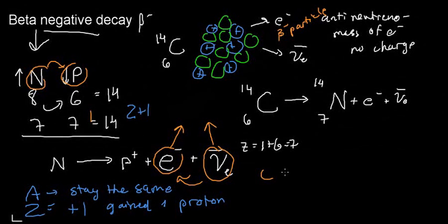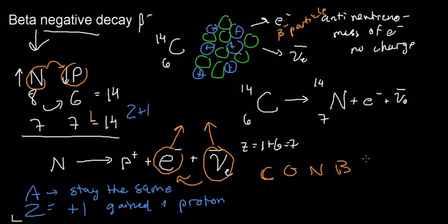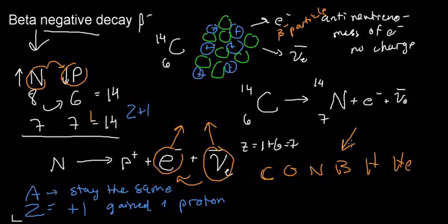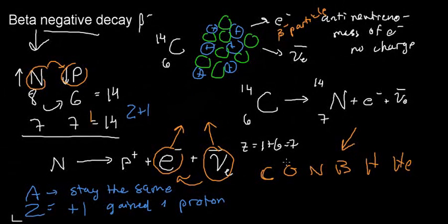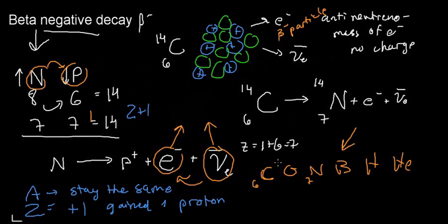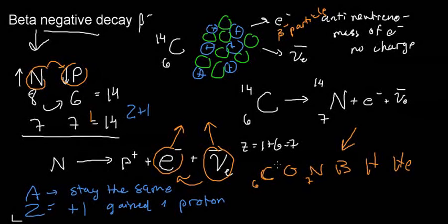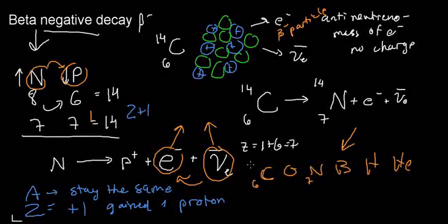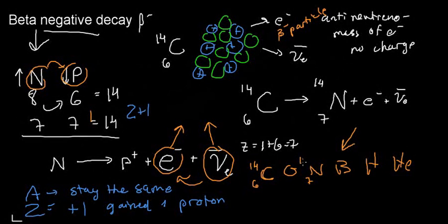They can ask you to give an example of a decay. Since carbon is Z = 6 and nitrogen is Z = 7, you can say: my mass number stays the same, I just turn this element into this element by shifting the atomic number.